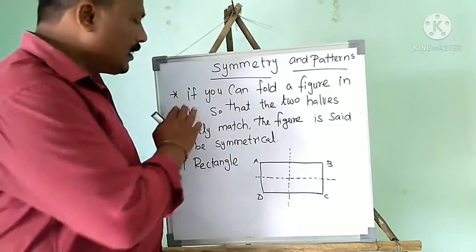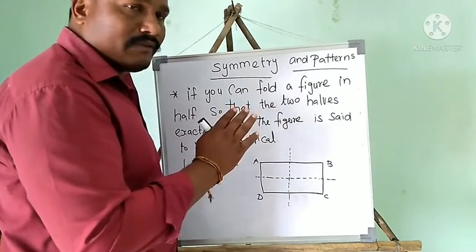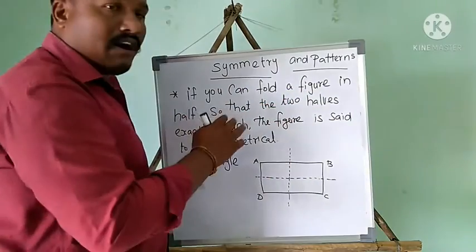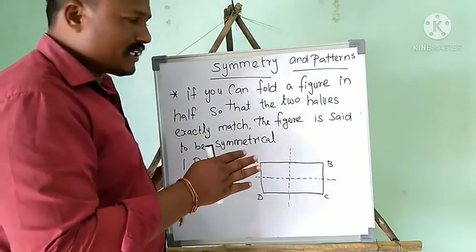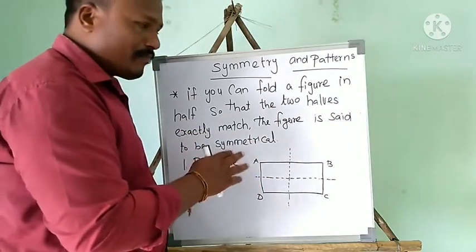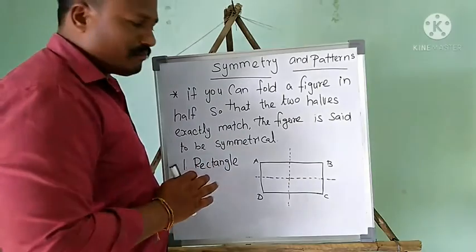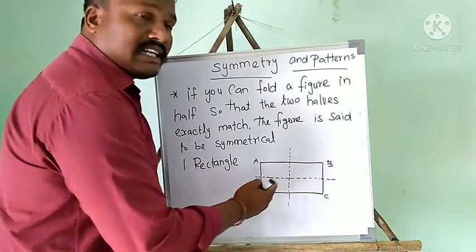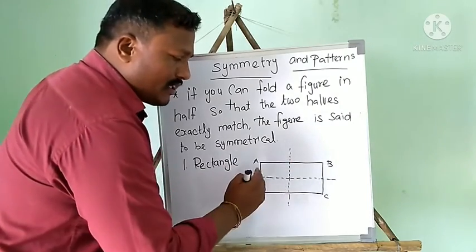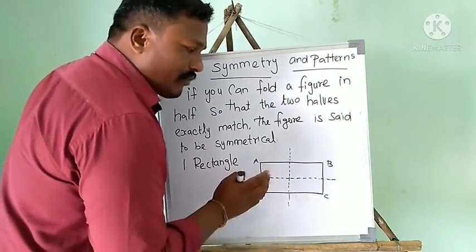If you can fold a figure in half, so that the two halves exactly match, the figure is said to be symmetrical. For example, if you take a rectangle shape and fold it in half, both sides match exactly.